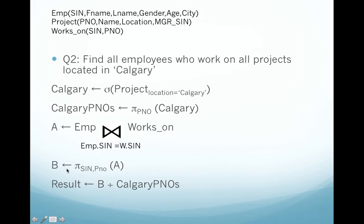B gives us all the projects that the employees work on. Then we divide it by all the project numbers that are located in Calgary. This gives us the result — everyone who works on all projects in Calgary.